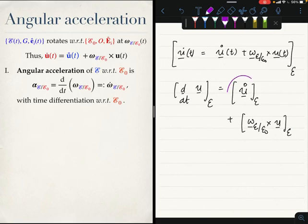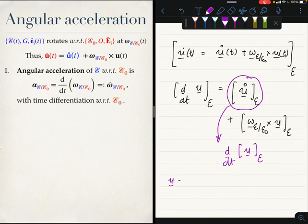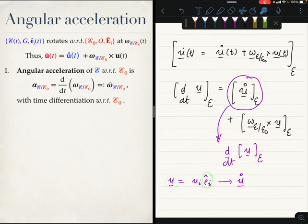You will quickly notice that this quantity — u-open-dot in the BFCS — is actually the same as the time derivative of the components of the vector u in the BFCS. This is because if you write u as u_i * e_i, then u-open-dot is the derivative of u with respect to an observer sitting with the BFCS. For that observer, e_i is constant, so u-open-dot is simply u_i-dot * e_i, which is precisely that.